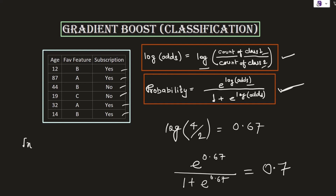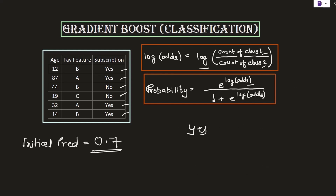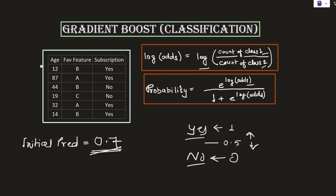So remember that we have an initial prediction of 0.7. Assuming the two classes yes and no, and a threshold of 0.5: a probability value less than 0.5 indicates the category no, and above 0.5 indicates the category yes. For the time being we have an initial prediction of 0.7 for all records, meaning irrespective of the actual category we are predicting 0.7 for every record. The next step is to add more models sequentially to improve this prediction.